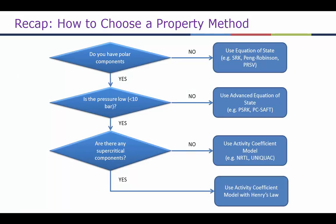The first step to design any mass transfer operation is to choose the correct property method. We've covered this in an earlier lecture but we will quickly recap. First, check if there are any polar components. If there are none, use a simple equation of state like SRK, Peng-Robinson, or PRSRB. If there are polar compounds, check the process pressure. Above 10 bar, use an advanced equation of state like PSRK or PCSoft. Below 10 bar, check for supercritical components — if none, use an activity coefficient model like NRTL or UNIQUAC; if supercritical components are present, use NRTL with Henry's law.